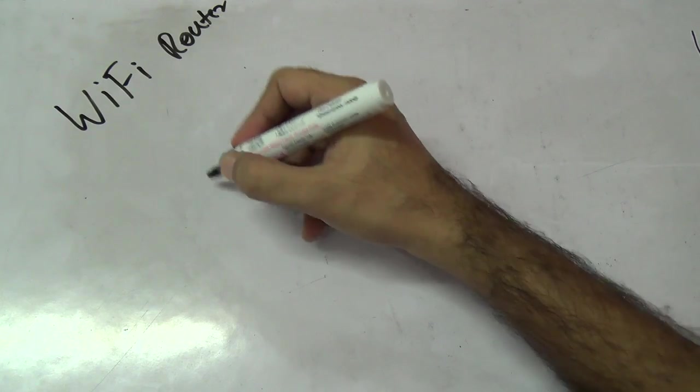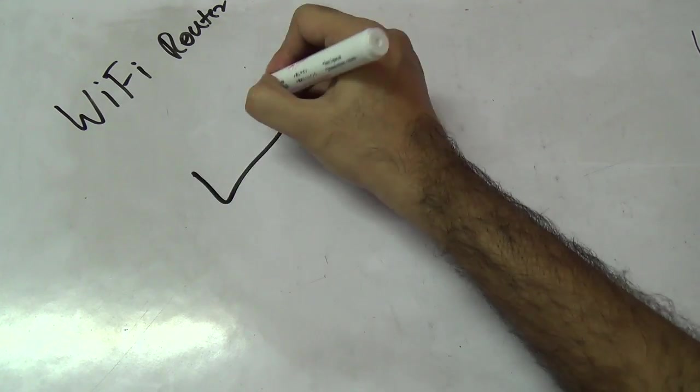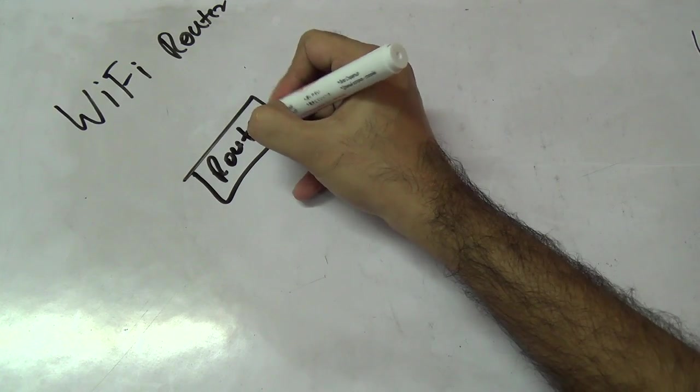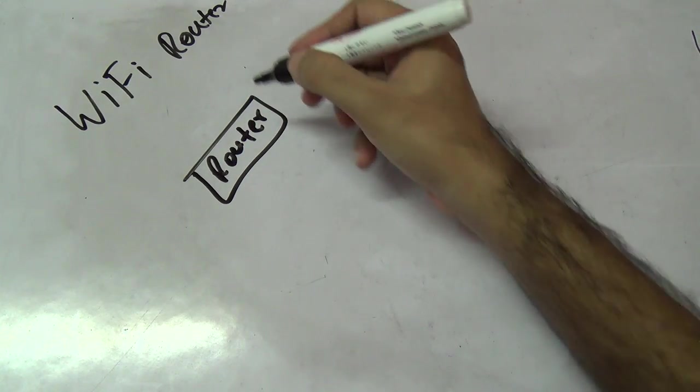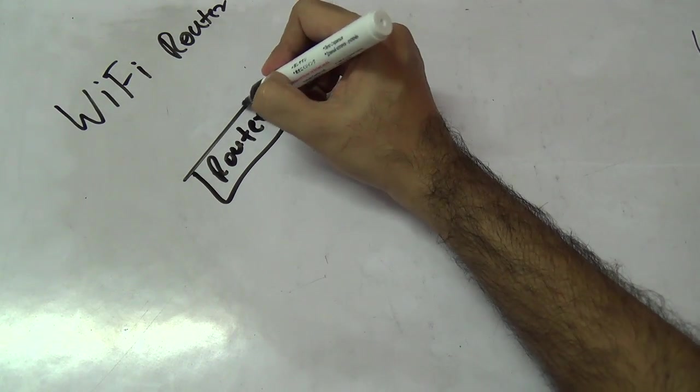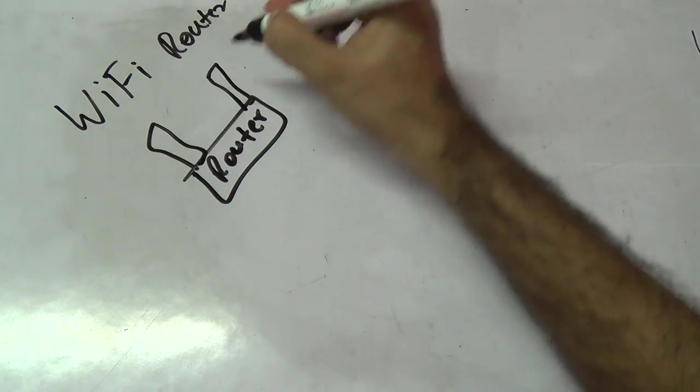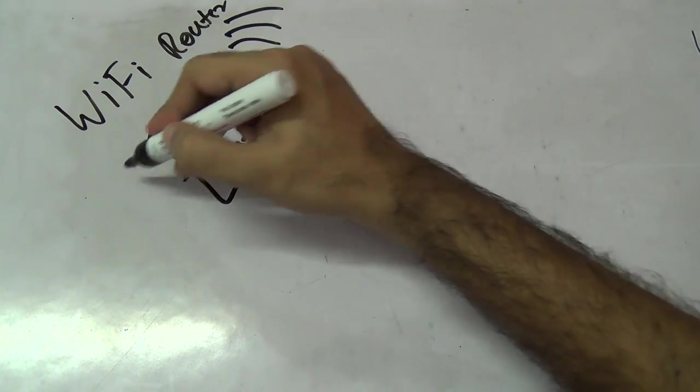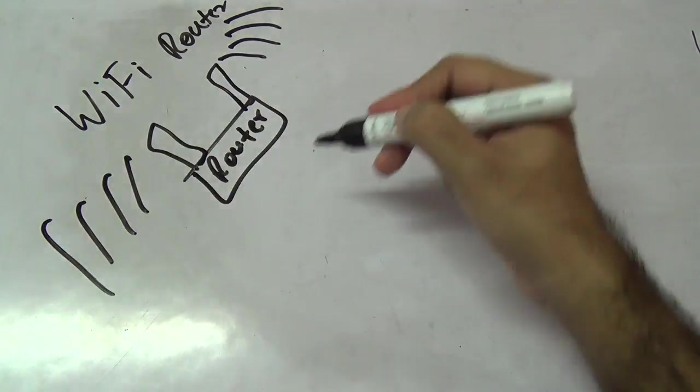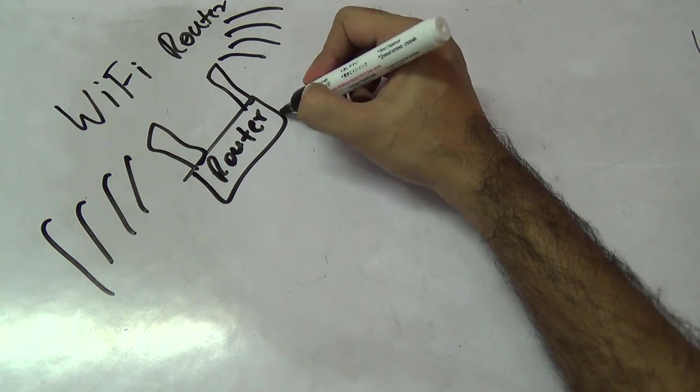That's usually done by having a router like this. Some have external antennas, some do not. Actually every Wi-Fi router has an antenna, but some have external ones. These transmit radio waves and thus you get your internet connection. This Wi-Fi router is attached to your internet connection.